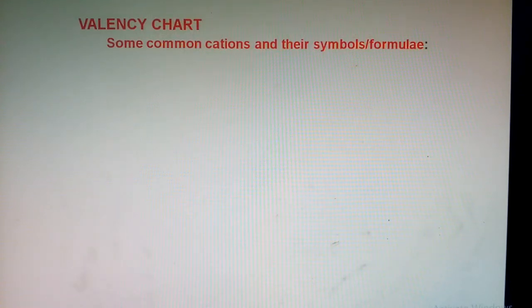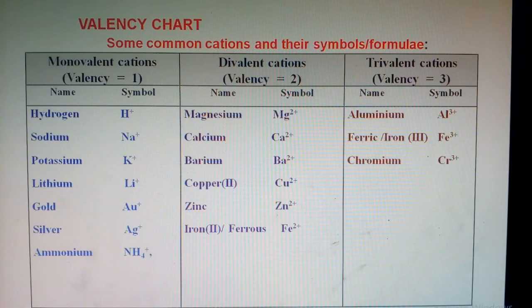Now let's look at a valency chart showing different ions, their symbols, and the number of positive or negative charges, which you can use for writing formulae. First, the valency chart for cations.